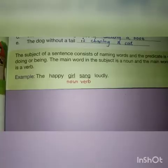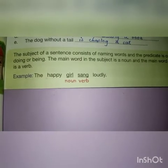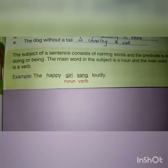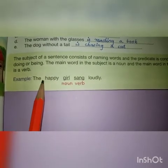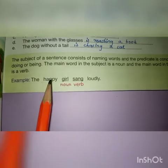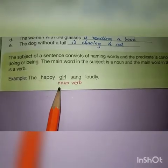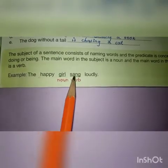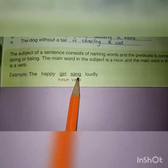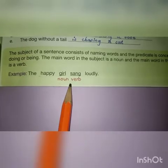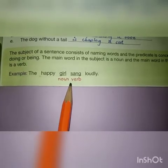For example: 'The happy girl sang loudly.' Here in the subject, 'girl' is the main noun, while in the predicate, 'sang' is the main verb.